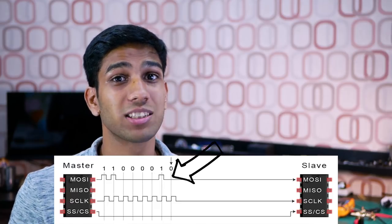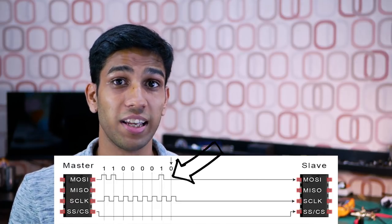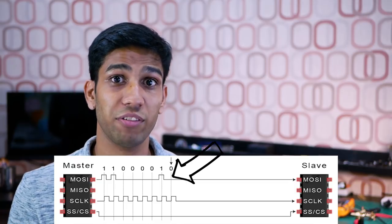Step number three: here's where the actual data communication happens. The master will transmit information to the slave with the master out slave in line that we talked about earlier. The master can send the information with the most significant bit first or the least significant bit first. This depends on the slave specification.